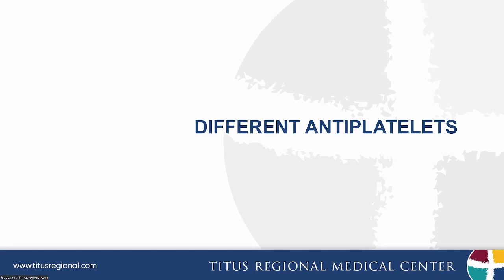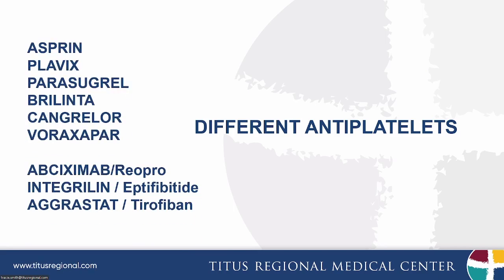This next slide shows the different antiplatelets we have. Very common ones: aspirin, Plavix, prasugrel (brand name Effient), Brilinta, cangrelor, vorapaxar. Then there are some IV antiplatelet agents: abciximab, integrilin, aggrastat. You don't have to memorize these — I've created the list as a reference so you can come back and identify that a drug is an antiplatelet and not an anticoagulant.